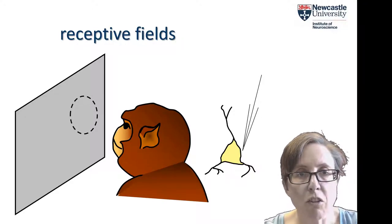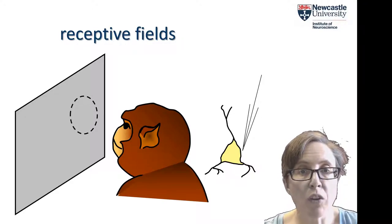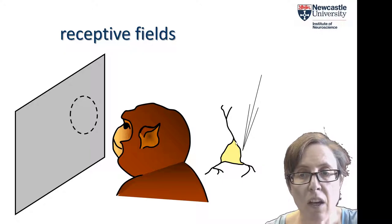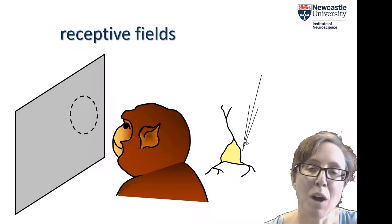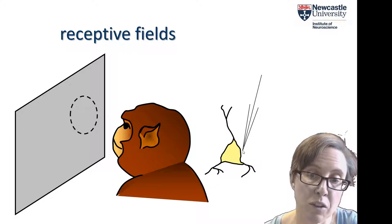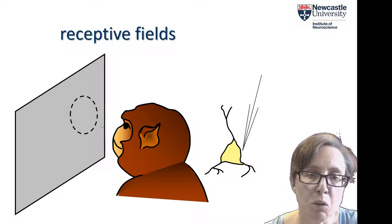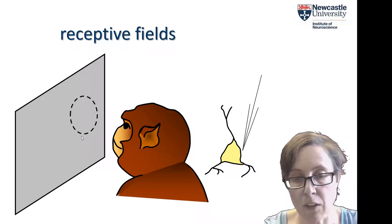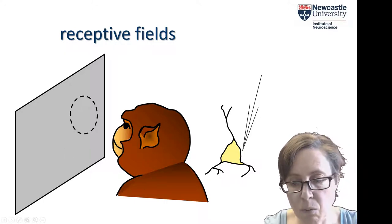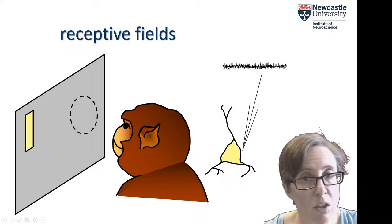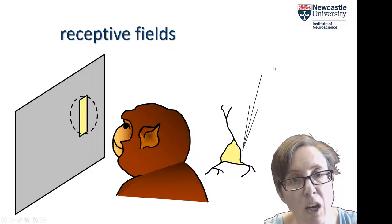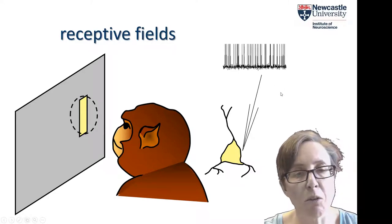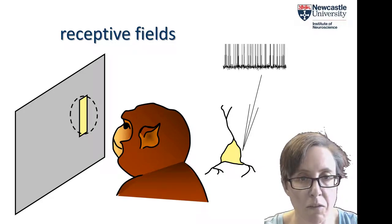Like many sensory neurons, cells in V1 have receptive fields. To illustrate that, here is a monkey looking at a screen, and here is a neuron where the experimenter is recording the activity of that neuron. On the screen we've marked the receptive field of this neuron — it will only respond to visual stimuli within this receptive field. If you present visual stimuli elsewhere on the screen, the neuron won't respond, but if you present stimuli inside the receptive field then you get a really strong response. So it's responding just to one particular region of the visual field.